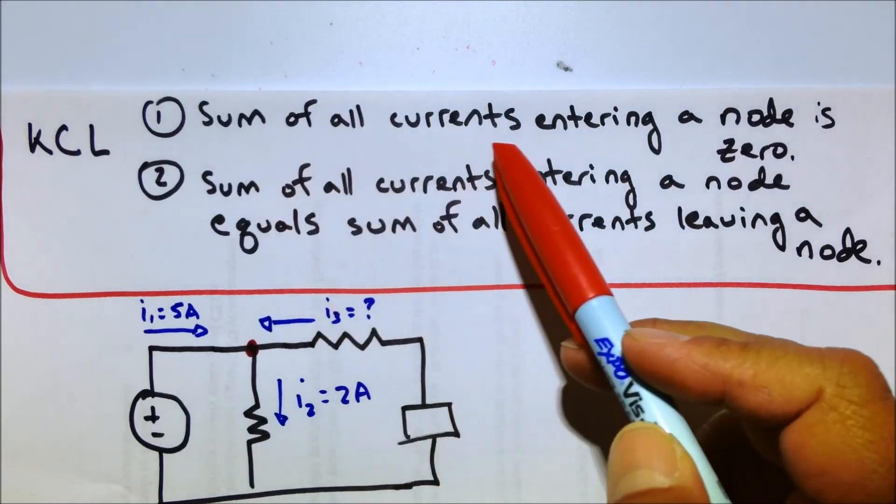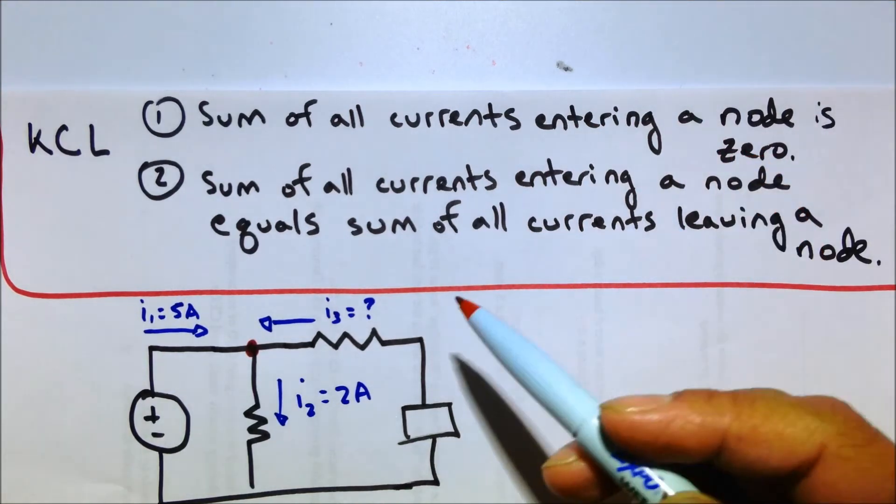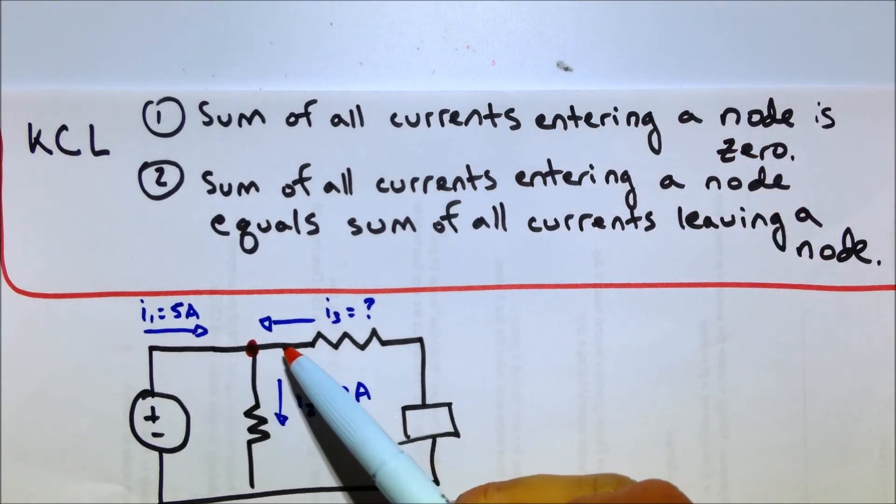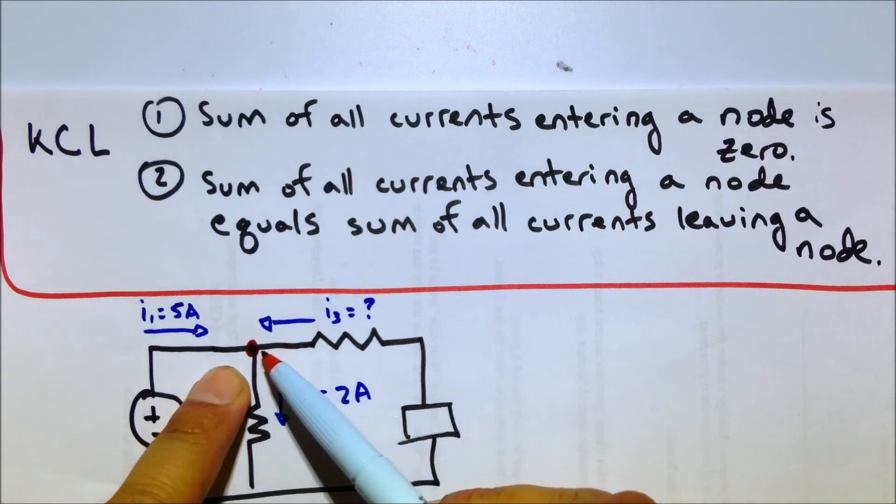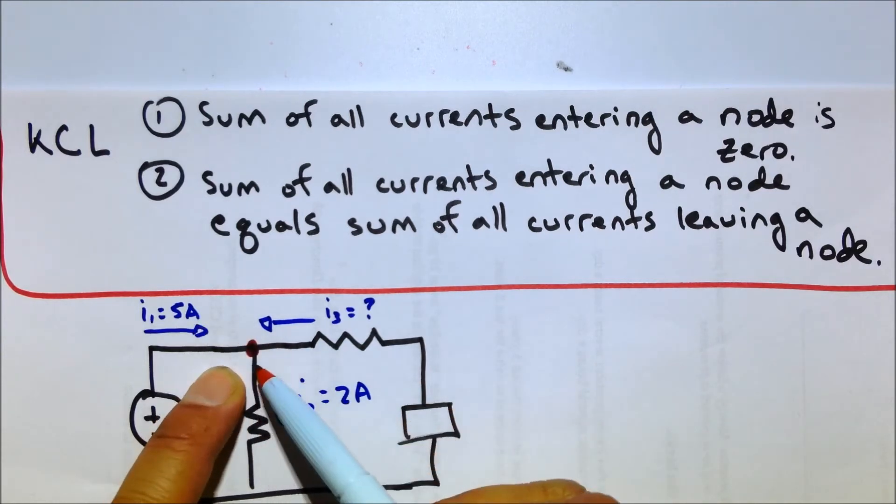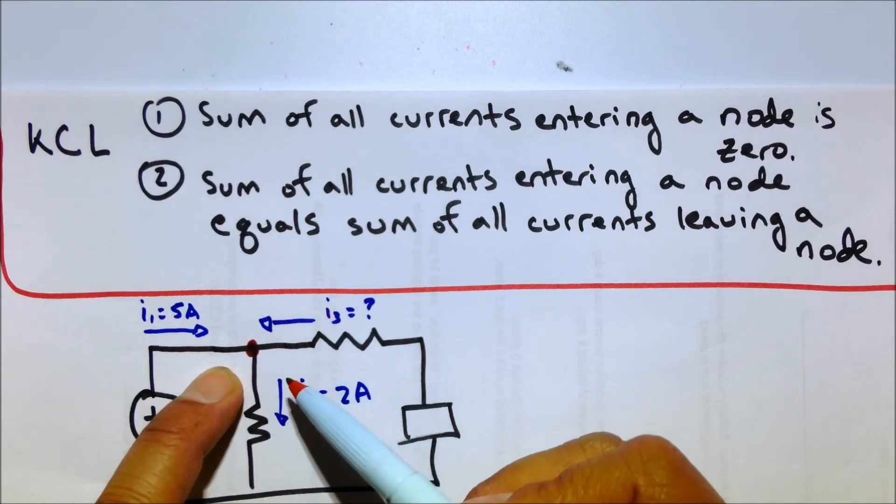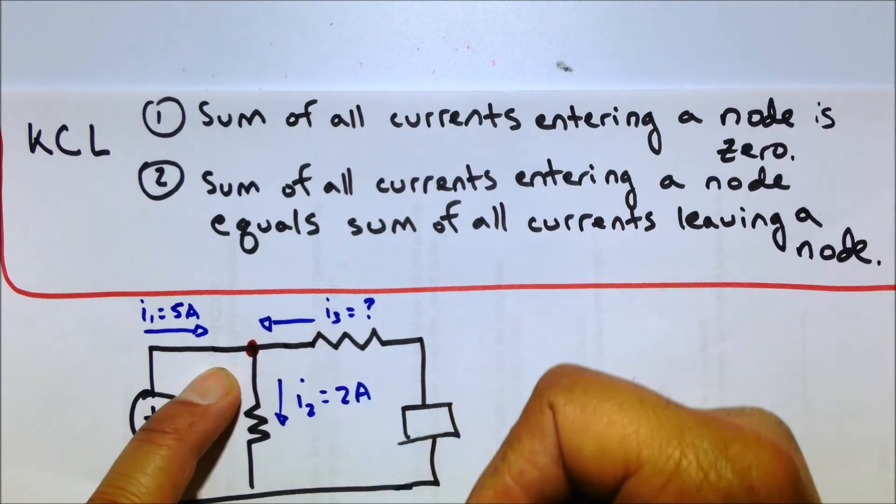When people say the sum of all currents entering a node is zero, what they're saying is that when you look at all the currents through this node, the current going into there, the current going into there, and the current going into there, if you add it all up, should equal zero, which means that some of these currents, or at least one, is actually going out of it.